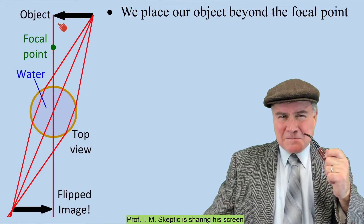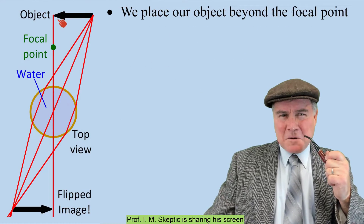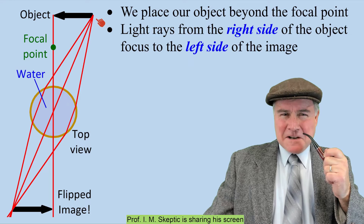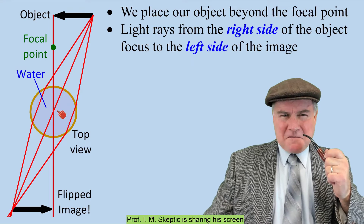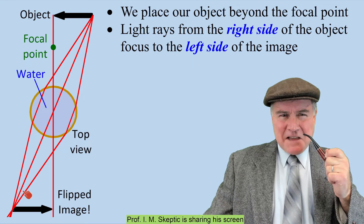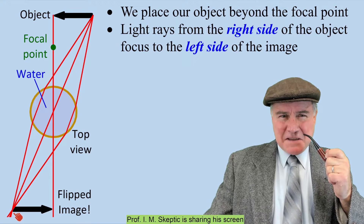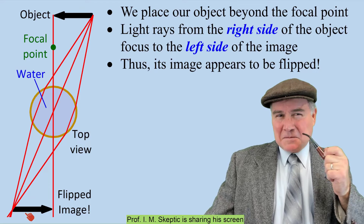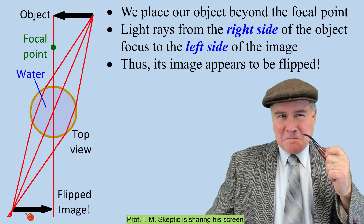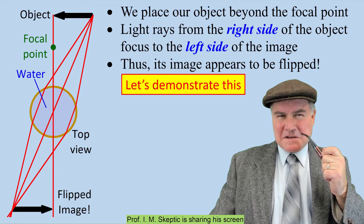When we place our object beyond the focal point, light rays from the right side of the object focus to the left side of the image. Thus, the image appears to be flipped or backwards.